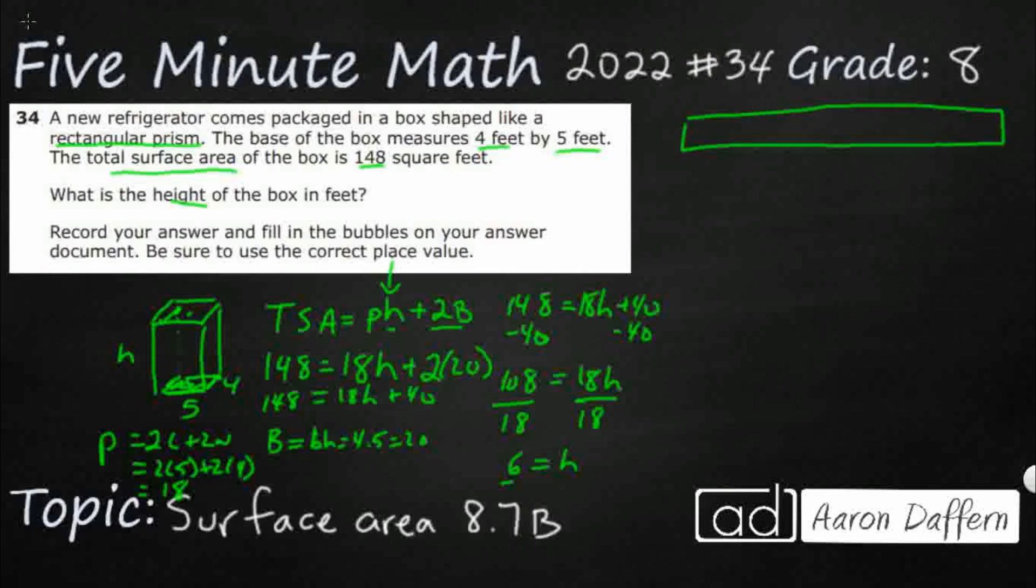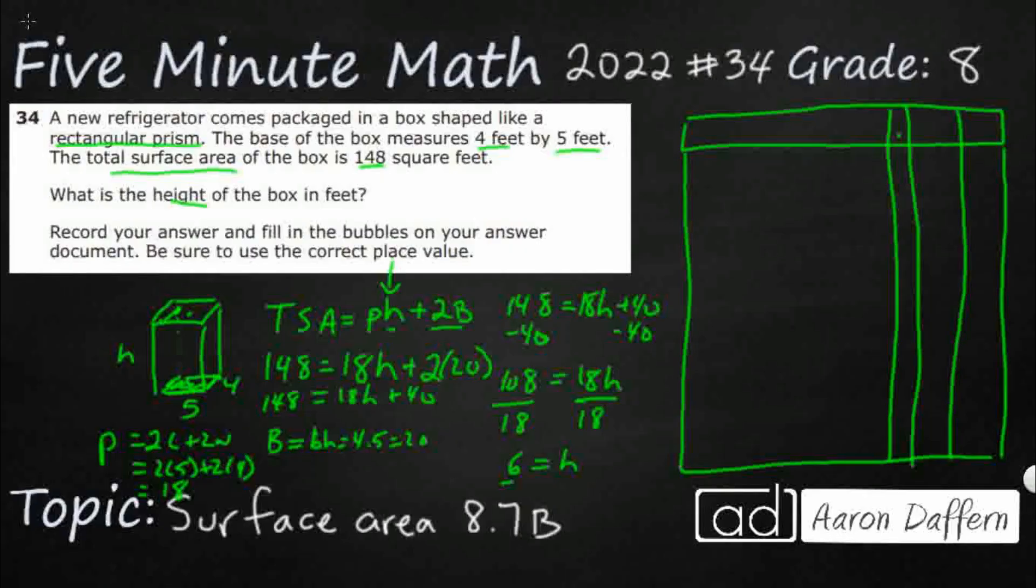We could do all that work and we could still get it incorrect if we don't bubble it correctly. So on our answer document, you're going to get a really thin, narrow column with no bubbles underneath. That is your decimal point. You've got two digits to the right of the decimal point. You're going to ignore both of those. No need to put zeros or anything.